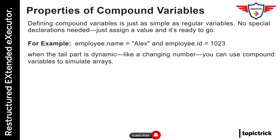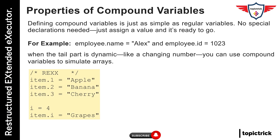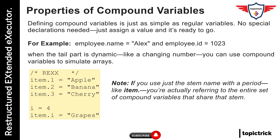Here's where it gets really interesting. When the tail part is dynamic — like a changing number — you can use compound variables to simulate arrays. For instance, in a loop, you could do something like item.1 equals apple, item.2 equals banana, item.3 equals cherry, and so on. You can even use a variable as the tail, like item.i equals grapes, where i is a loop counter. That's REXX giving you powerful, flexible indexing without needing a formal array structure.